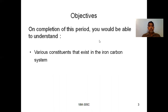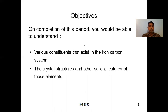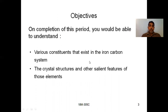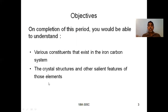In this session we are going to discuss various constraints that exist in the iron-carbon system, the crystal structures, and the salient features of those elements. We will discuss what various constraints are present in the iron-carbon alloy and how the crystal structures will be at different temperatures.